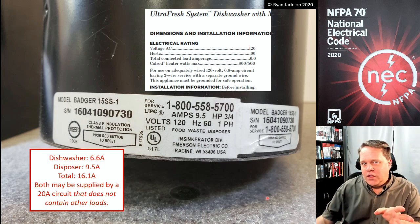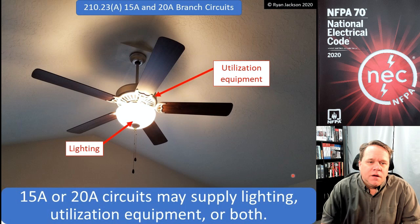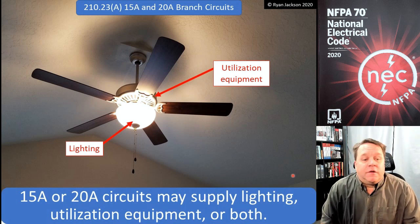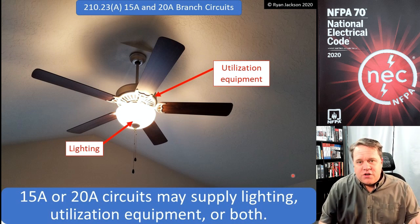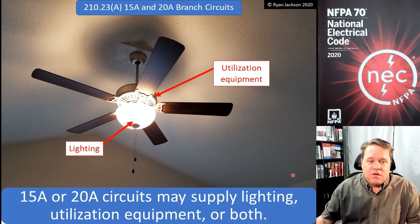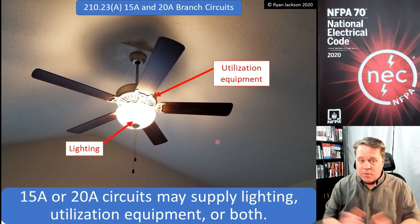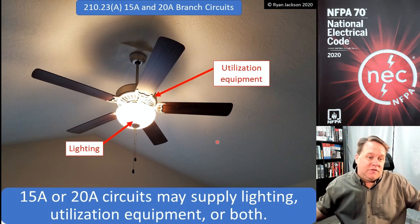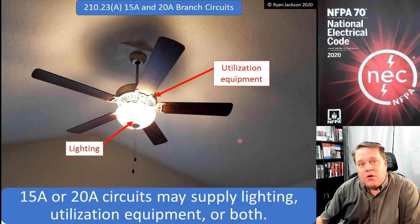Let's keep talking about 210.23(A) — 15- and 20-amp branch circuits. These can supply lighting, utilization equipment, or both. That's good because in this example we have lighting and a motor, which is utilization equipment. If the code said it could only supply one or the other, you'd need two circuits for something like a ceiling fan. So obviously a 15- or 20-amp circuit can supply lighting, utilization equipment, or both.